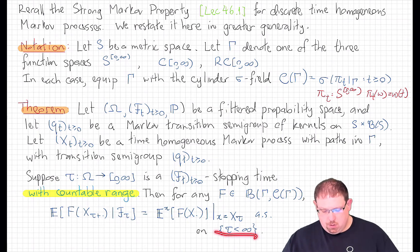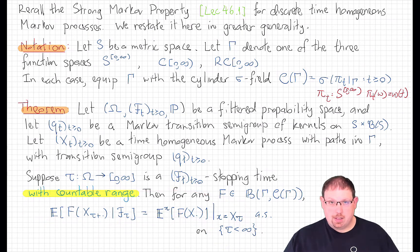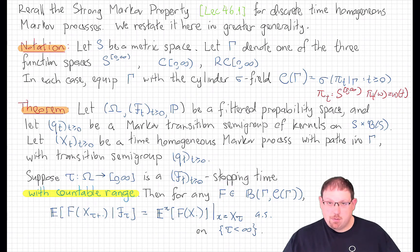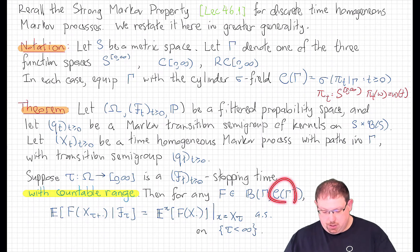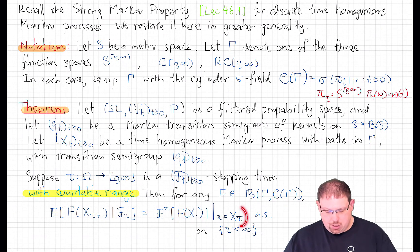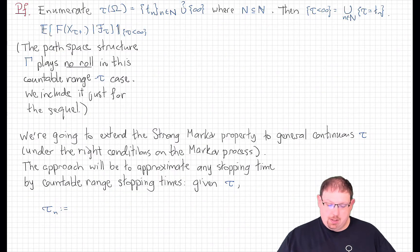Of course, that only makes sense on the event that tau is less than infinity, and on that event these two are equal almost surely. Evaluating these conditional expectations at all test functions recovers the entire law of this process if we think of that law as a probability measure on the sigma field. This tells us that the law of the process shifted by tau is the same as the law of the original process started at x_tau. The proof of this is nearly identical to the one given for the discrete time setting in lecture 46.1, but let's go through it again just to jog our memories.